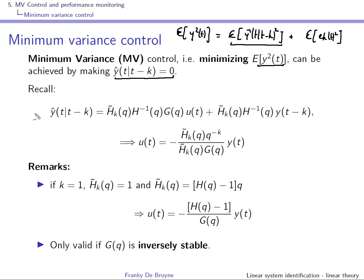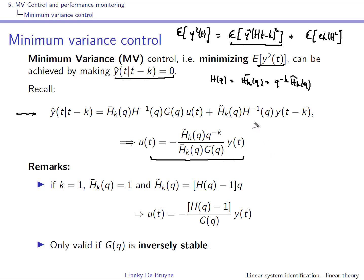We've seen previously that the K-step-ahead prediction can be written using this decomposition in two parts. If you want to make this zero and you can act on the input using feedback, you use this feedback — Q minus K divided by H tilde inverse Q. The H tilde inverse Q will cancel out, and this is really the minimum variance controller.